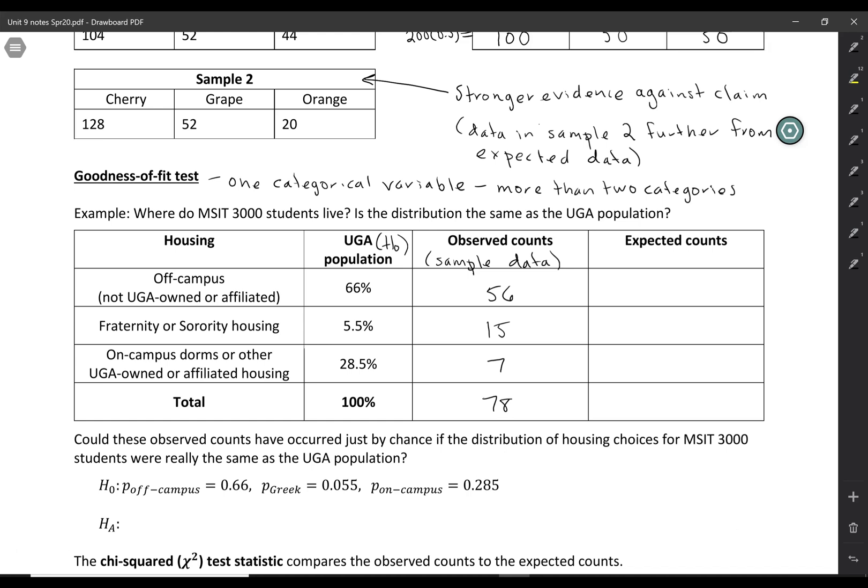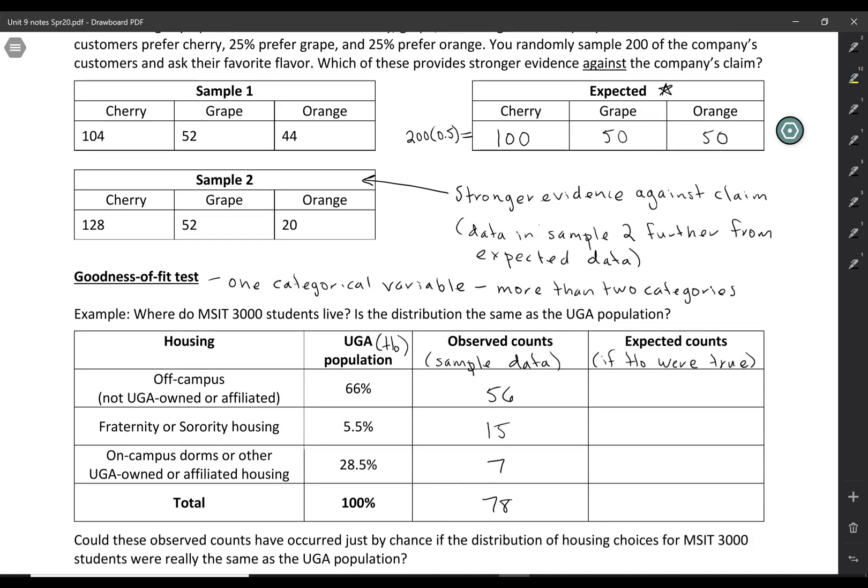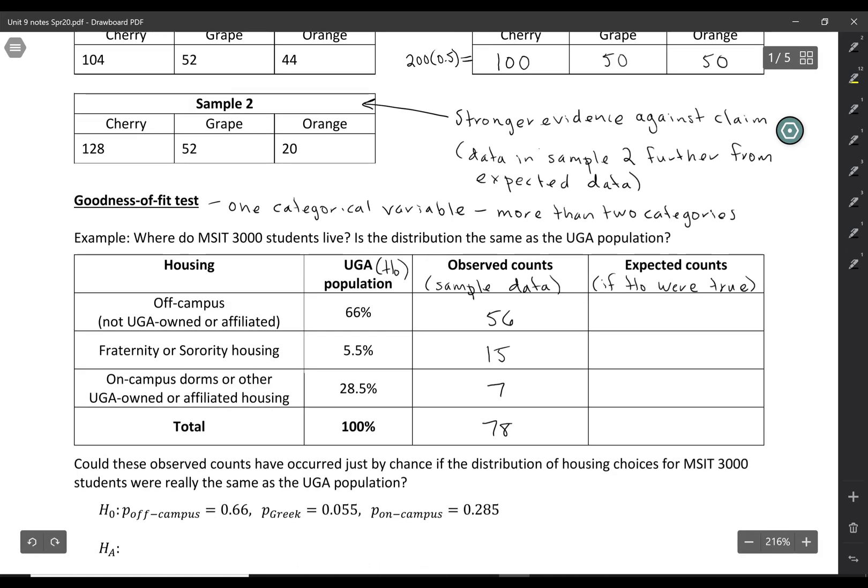Okay, so I'm going to compare my observed counts to what I would expect if the null hypothesis were true, if MSIT really matched the UGA population. So what would we expect if the null hypothesis were true? So just like you did up here, where you took the sample size and you multiplied it by the percentage, that's what we're going to do. So we're going to take our sample size with 78 and multiply it by the percentage, 0.66, and that comes out to be 51.48.